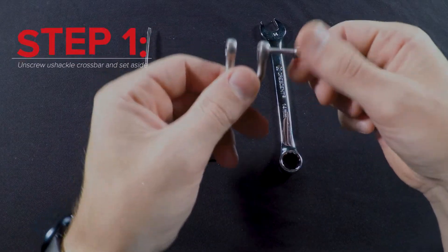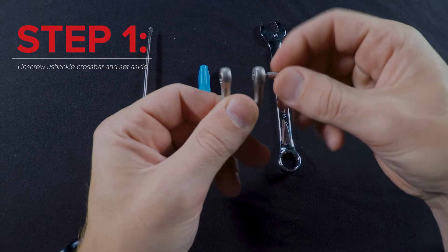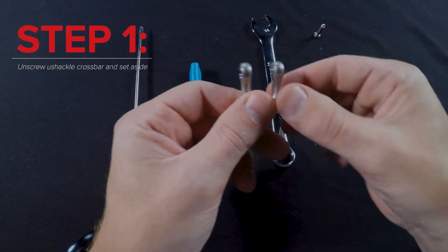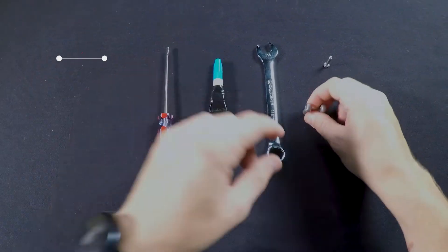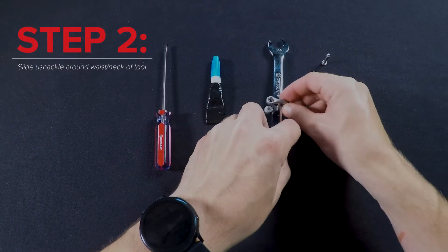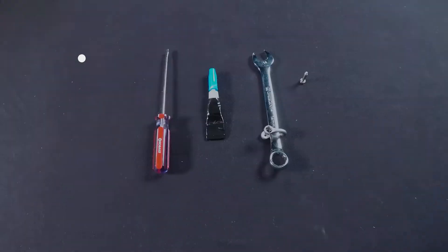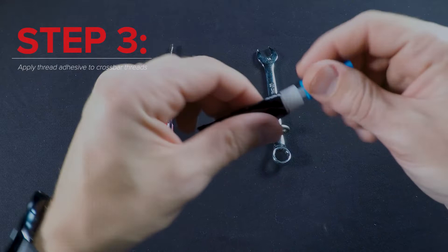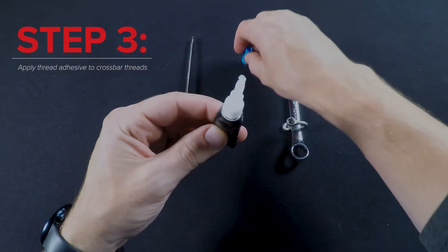To start, unscrew the shackle crossbar and set it aside. Next, slide the u-shackle around the waist or neck of the tool depending on the type. Apply thread adhesive to the threads on the crossbar and screw it back into the u-shackle.